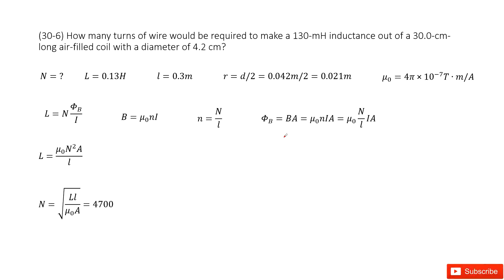Chapter 30 is about inductance, electromagnetic oscillations, and AC circuits. So we can see we have a wire, and we know some quantities.